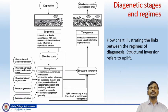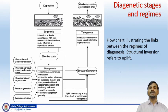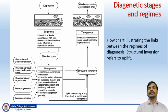The rocks or sediments present in the mesogenetic stage are uplifted due to the process called structural inversion. The upliftment may happen at any time, depth, or temperature during the burial period. Structural inversion causes the sediment to be exposed into the third regime of diagenesis — telogenesis — where the sediments interact with meteoric water usually at shallow burial depth and are further exposed to weathering, erosion, and transportation processes.